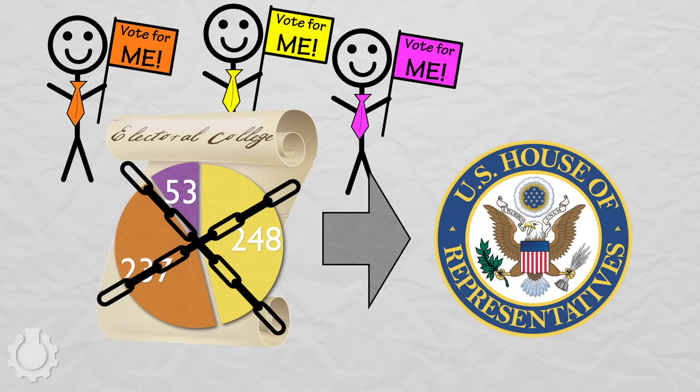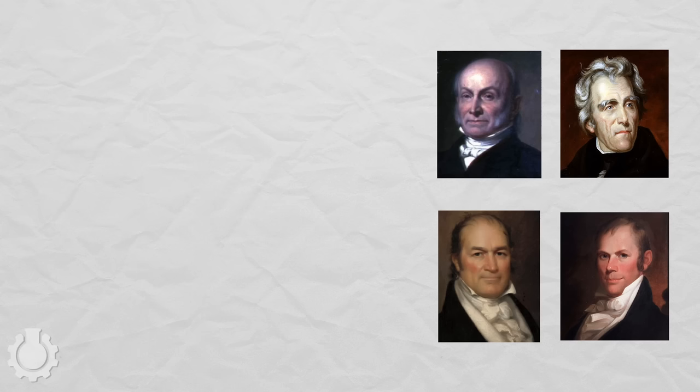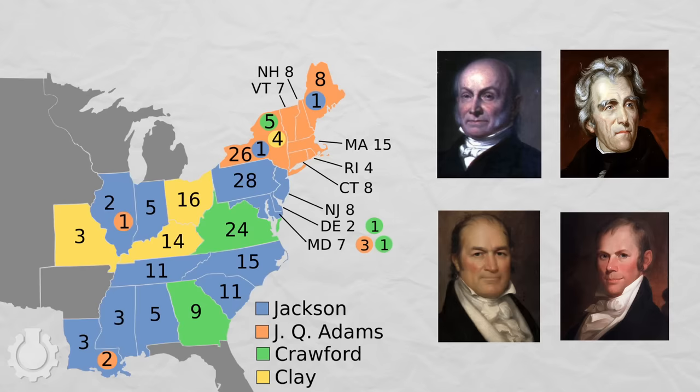While an exact tie is unlikely, this system is also used if there are more than two candidates and none gets a majority in the Electoral College — which is exactly what happened when four candidates ran for president in 1824. Andrew Jackson got the most votes from Americans and the most votes in the Electoral College, but not a majority, so the race was turned over to the House of Representatives, voting as states, who picked John Quincy Adams instead.